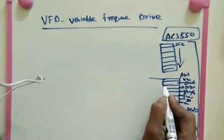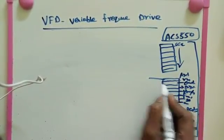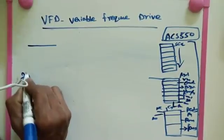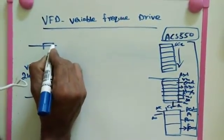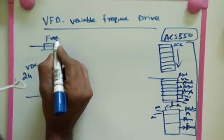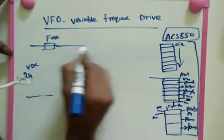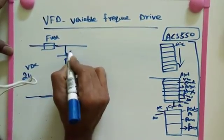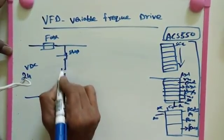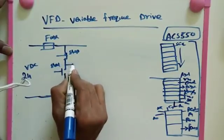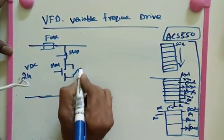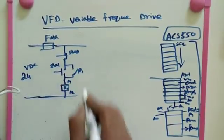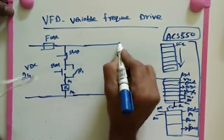Now I will draw the control diagram. We use 24 volt DC as the source supply, with a fuse after it. Then we make start and stop control using relays — a stop push button, a start push button, and NO contact of relay R1, connecting to relay coil R1 on terminals A1 and A2. This is a simple start-stop circuit to control the VFD.